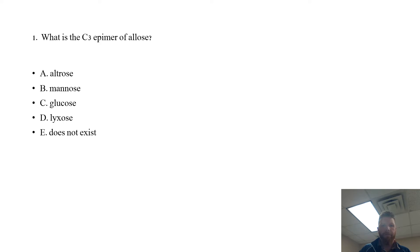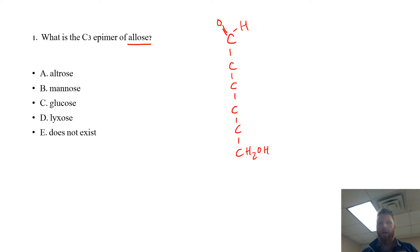The first question is: what is a C3 epimer of allose? A couple of things you need to do right off the bat is know what allose looks like. I'm going to draw a linear form of allose. Allose is a hexose, an aldohexose, with six carbons. For the sake of this demonstration I'm going to show what D-allose is. D-allose has our hydroxide group on our penultimate carbon on the right-hand side.